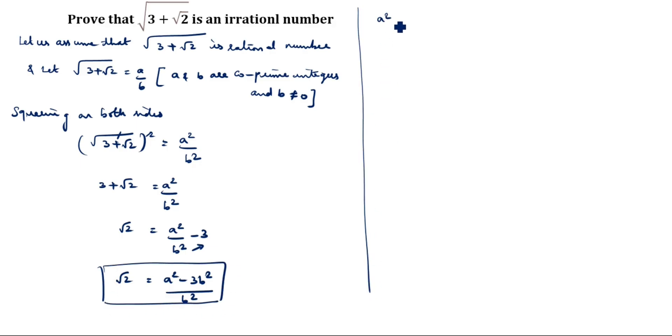Next, a square minus 3 b square divided by b square is a rational number because a and b are integers. So root 2 is also rational number.